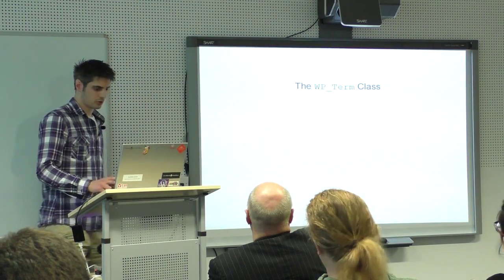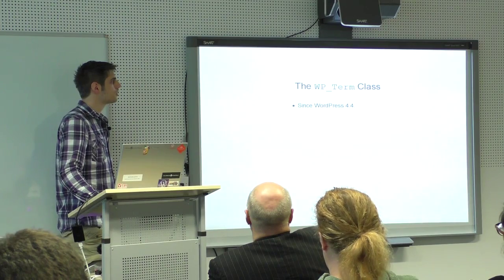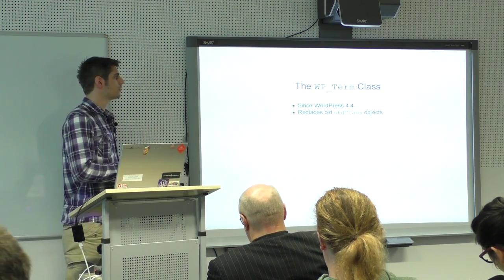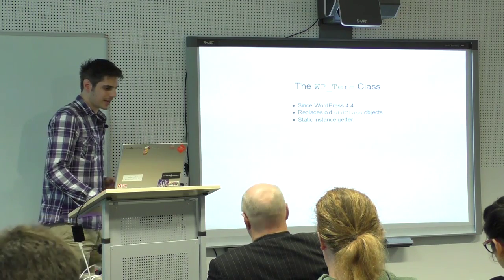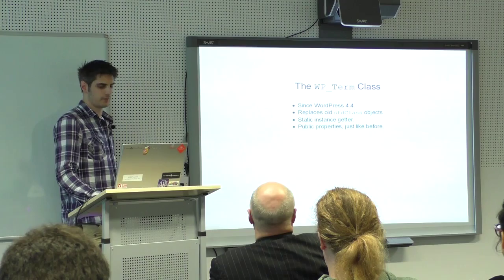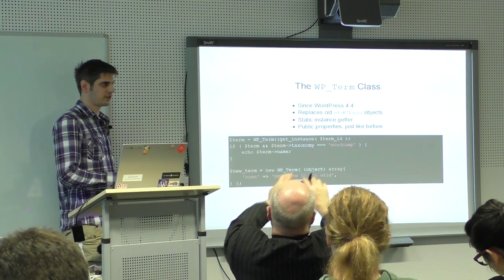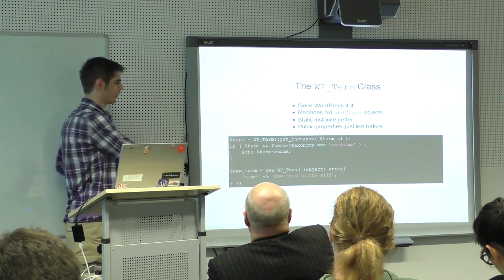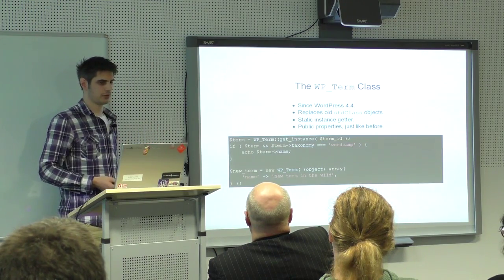Let's finish with the latest upcoming news on the term taxonomy section. In WordPress 4.4 there will be the WP_Term class — a WP term object that replaces the old data container. There is a static getter for an instance of that term. Every public property that those terms had before is still there. You can fetch the object for some term ID and work with it, or create a new WP_Term object — though that doesn't mean a new term in the database; you've only created an instance of the WP_Term class.